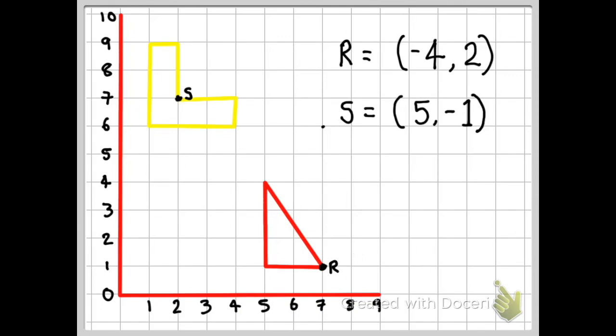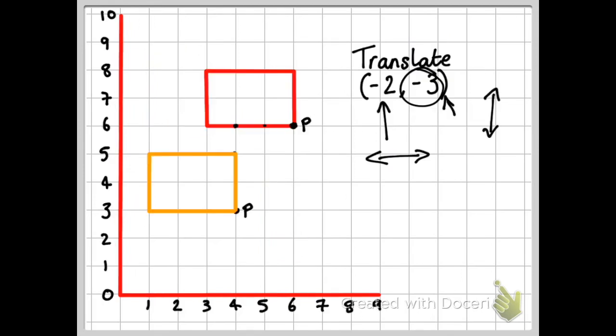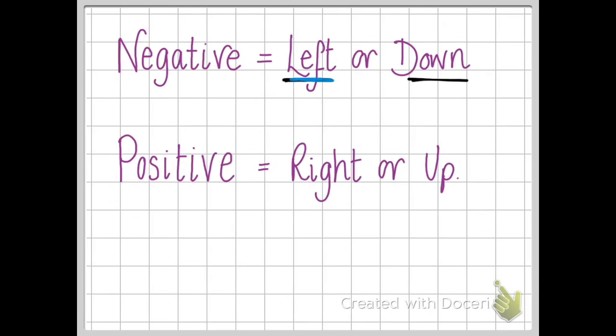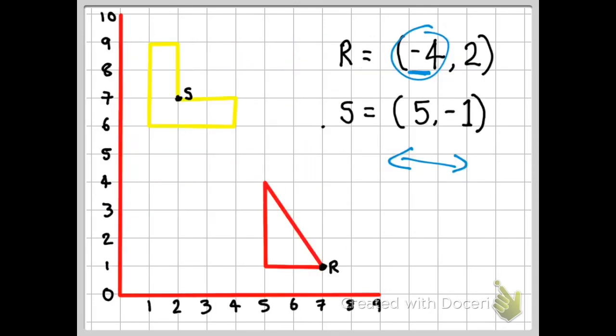So the first number, and I'm going to use a different color for this. The first number is minus four. Now, don't forget, the first number decides if we go left or right. And because it's a negative number, that means I'm going to be going left again. So I'm going to go left by four. So here's R. One, two, three, four. So that's where R is at the minute.